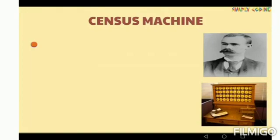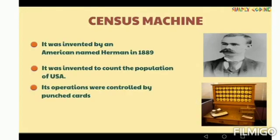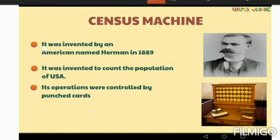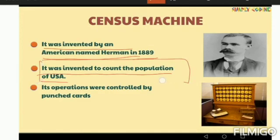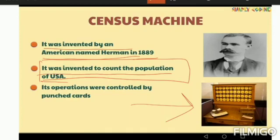The tabulating machine was invented by an American named Herman Hollerith in 1889. It was invented to count the population of the USA — this is also an important point. Its operations were controlled by punch cards, so this device is also based on punch cards.